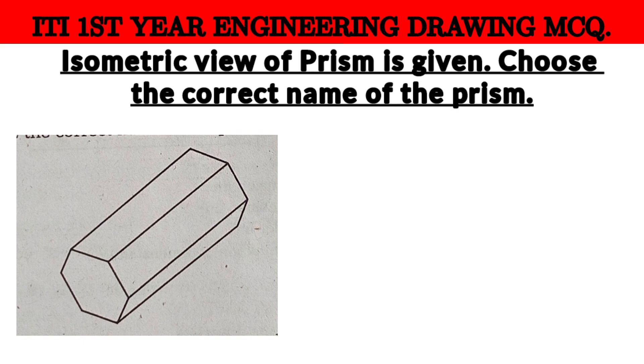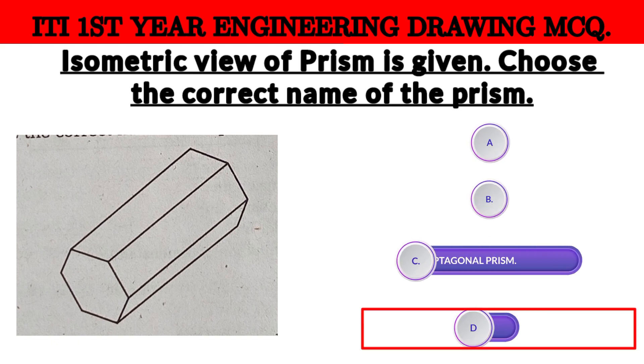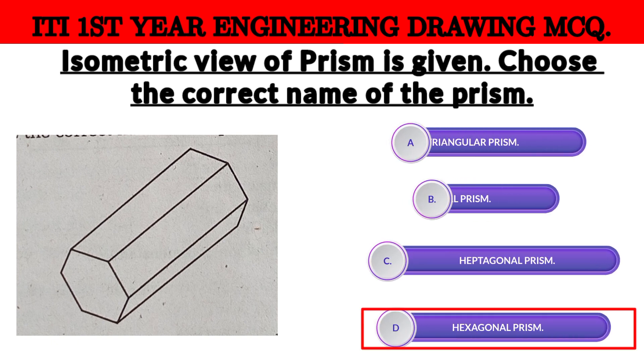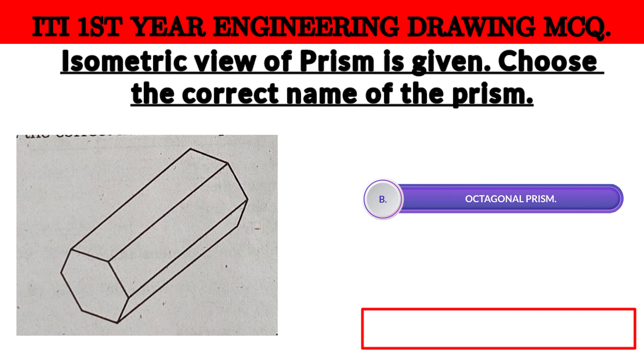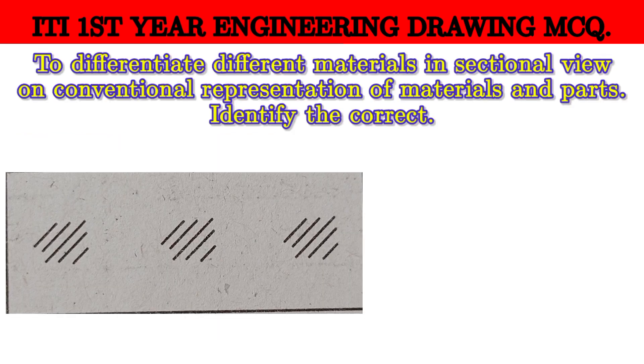This is a very important question. The isometric view of the prism given, identify the correct name. This is the correct position. The right answer is the hexagonal prism.